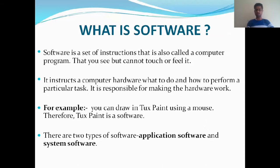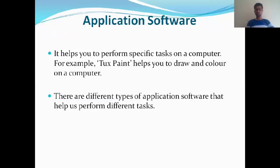There are two types of software: the first is application software and the second is system software. Application software helps you to perform specific tasks on a computer. For example, a paint application helps you to draw and color on a computer — you can draw shapes, diagrams, or pictures with it.